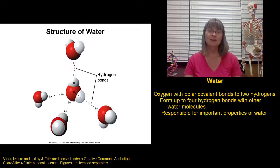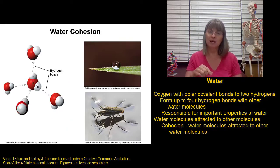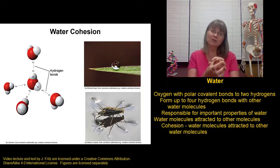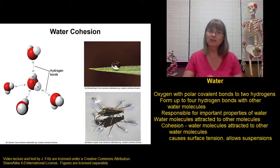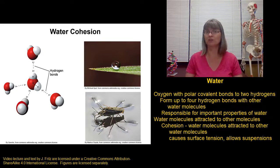First, the ability to form hydrogen bonds means that molecules of water are attracted to other molecules of water. This gives water what's called cohesion. When you put a drop of water on a tabletop, it doesn't spread out but stays together in a drop. When water molecules are more attracted to each other than to surrounding substances, the water stays together. This cohesion gives water surface tension, allowing things to rest on top of water and allowing blood cells to remain suspended in blood.